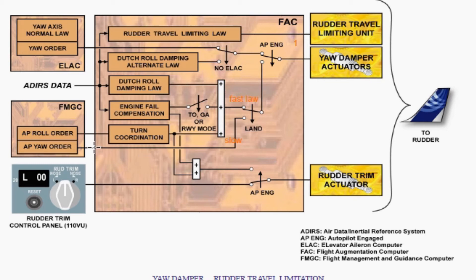When we switch to land mode, the Flight Management and Guidance Computer yaw order controls the yaw damper actuator via the Flight Augmentation Computer. In land mode, the Flight Augmentation Computer passes the yaw order from the Flight Management and Guidance Computer to the yaw damper.